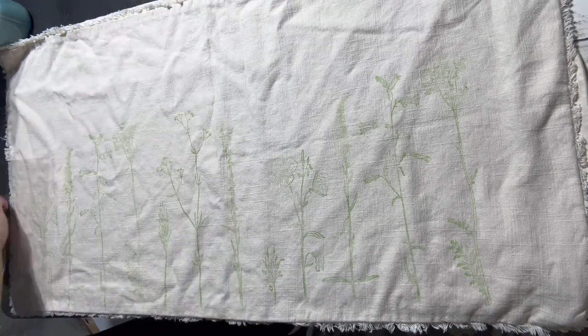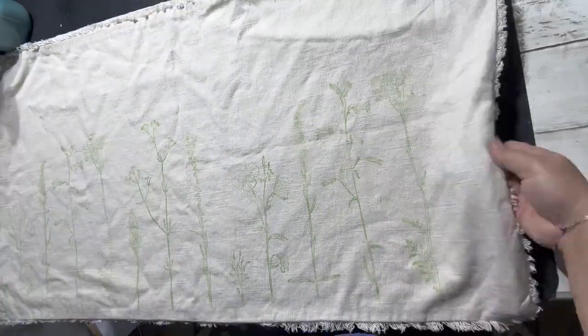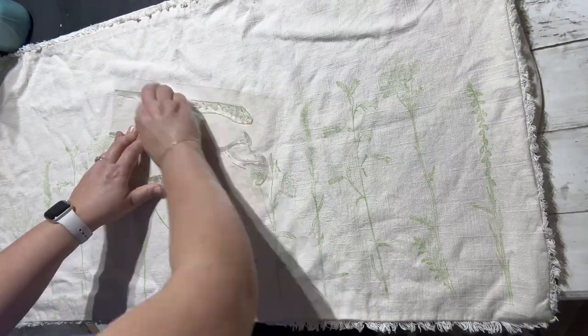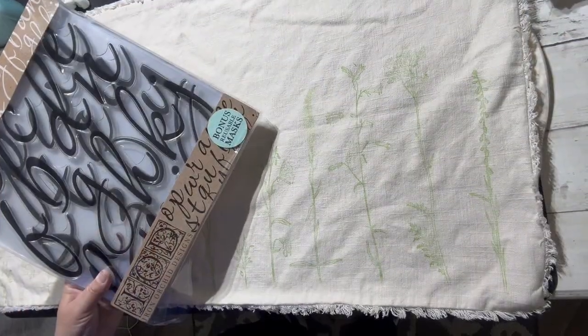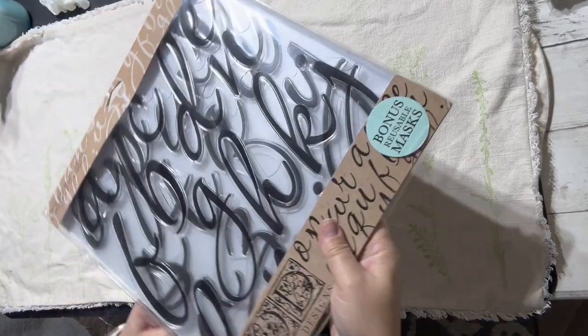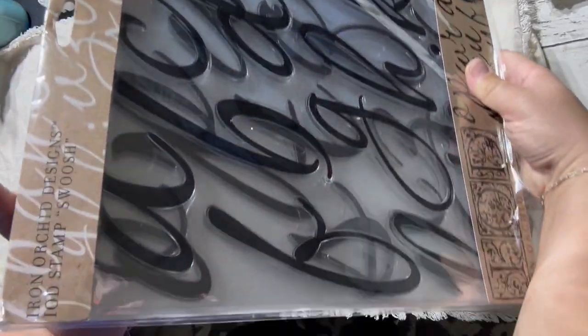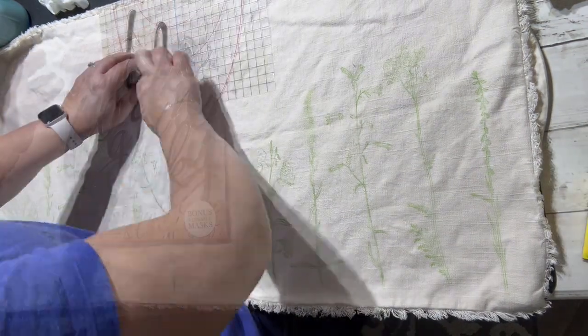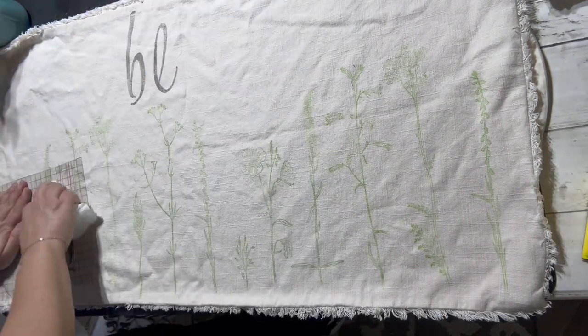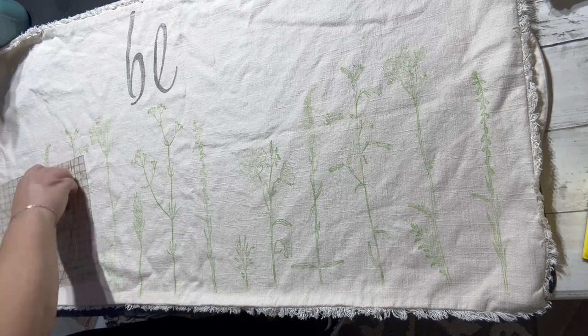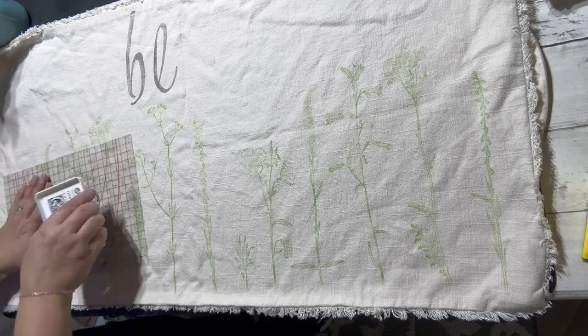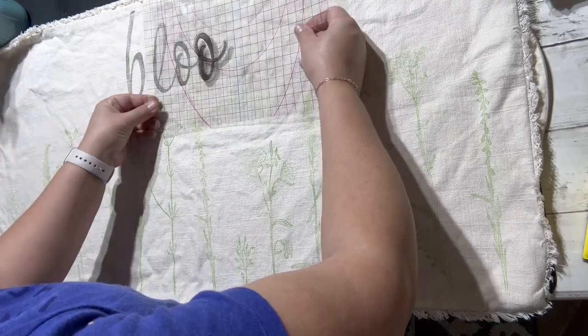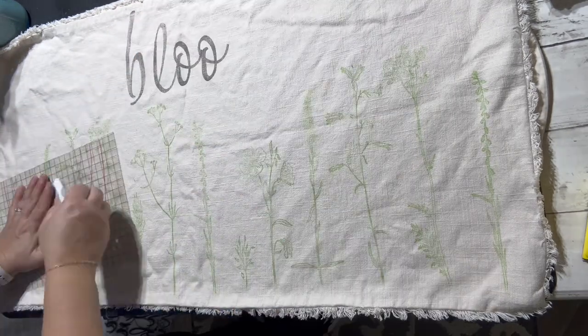For the bloom word, I'm going to be using the IOD stamp set called Swoosh. It's a very pretty cursive stamp set. All of those letters actually blend in together so that they look like it's actual cursive, which makes it pretty cool. I just chose to use the black ink for the bloom. It would have been pretty in blue as well.